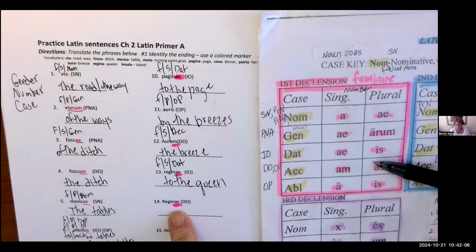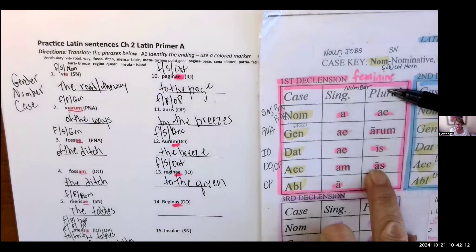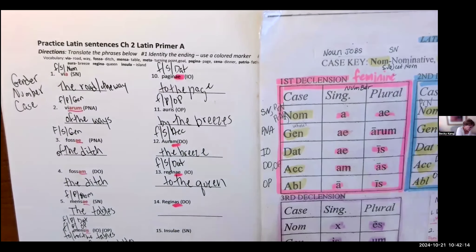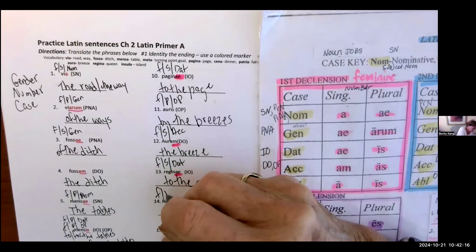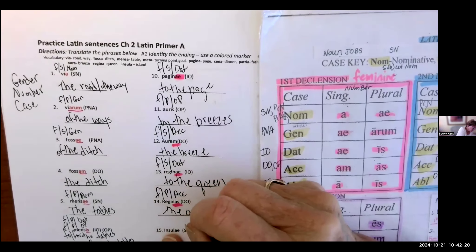So reginas is queen. This is an as. It's a direct object. It's plural. So here we go. It's first declension. It's feminine. It's plural. And it's accusative. And it means the queens.